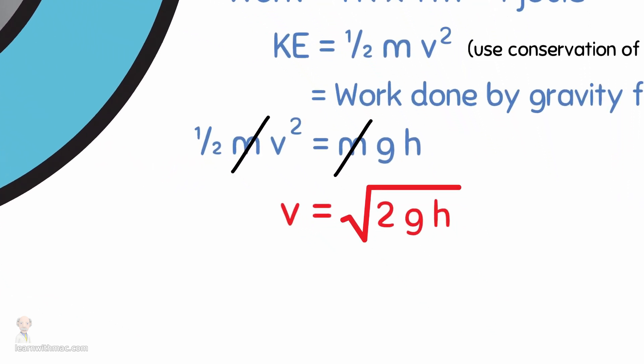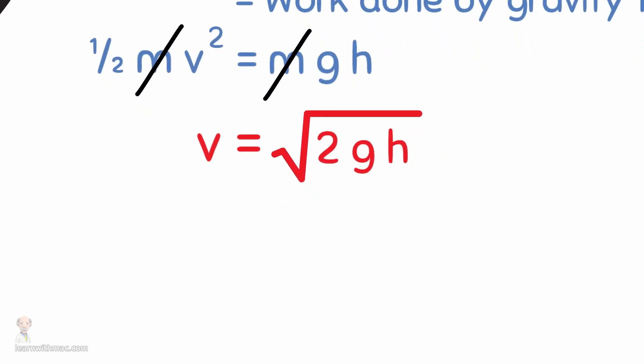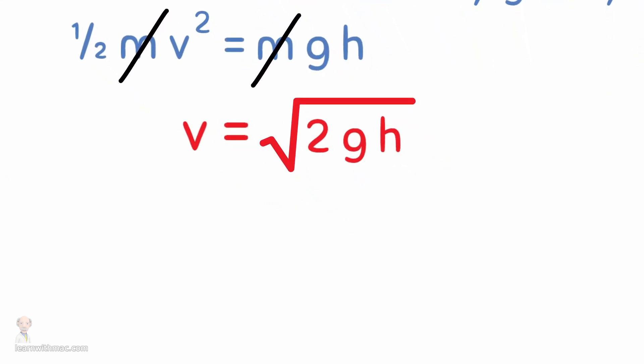This is very interesting as it shows the velocity of the object does not depend on the mass of the dropped object. It tells us that all objects would have the same velocity after dropping one meter.